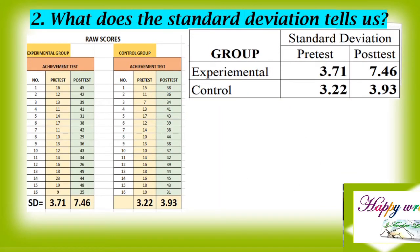What does the standard deviation tell us? As you can see in the table, the computed standard deviations of students from both groups during pre-tests were almost the same. But the standard deviation of the experimental group at 3.71 was higher than the control group at 3.22, meaning the experimental group's scores were spread toward very high or very low, while the control group achieved close to the average score with few achieving high or low scores.